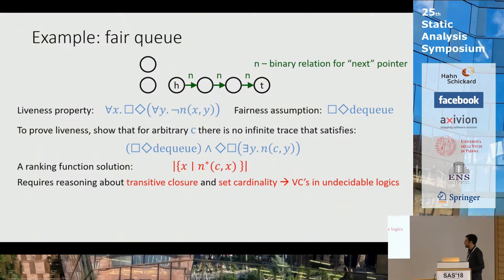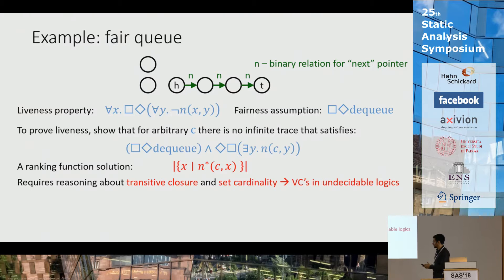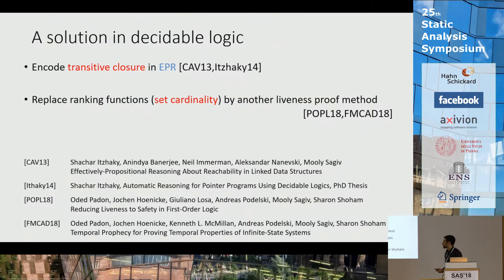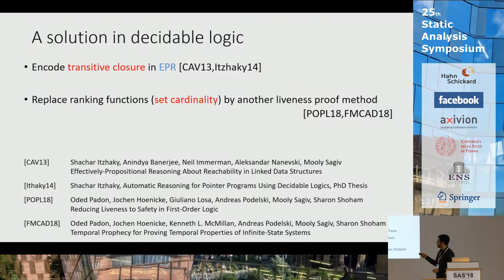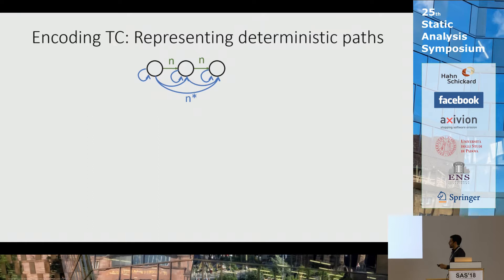The classical way to prove this is to provide a ranking function. A natural one would be the cardinality of the set of all X such that N* holds between C and X, where N* is the reflexive transitive closure of the list pointer N. But from the perspective of decidability this is very problematic: it contains both transitive closure — not expressible in first-order logic — and set cardinalities. Combined with quantifiers, this leads again to undecidability for checking the verification conditions.